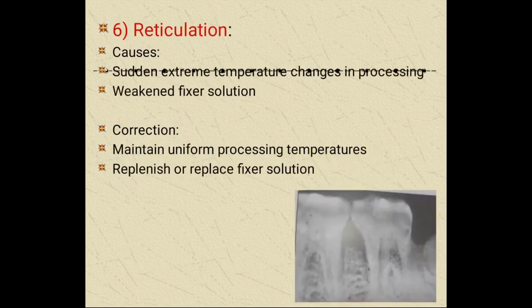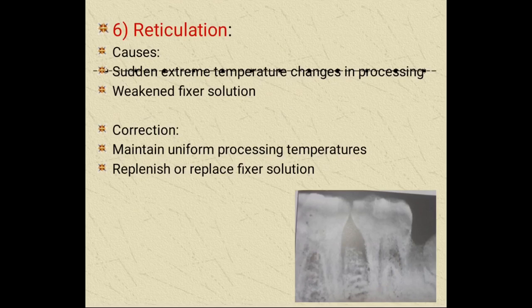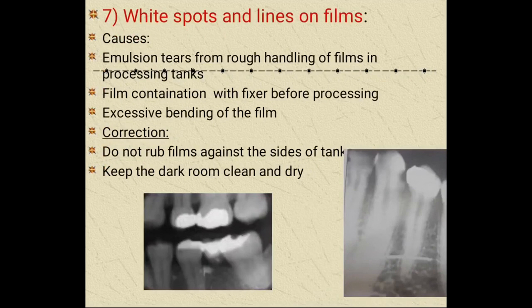Reticulation shows a reticulate appearance, due to sudden extreme temperature changes in processing. Correct by maintaining uniform processing temperature and replenishing or replacing the fixer solution. White spots and lines on the film are due to emulsion tears from rough handling of film in processing tanks, film contamination with fixer before processing, or excessive bending of the film. Correct by not rubbing the film against the side of the tank and keeping the tank room clean and dry.